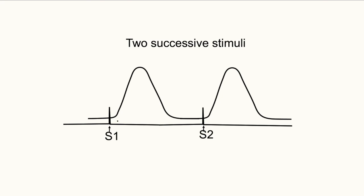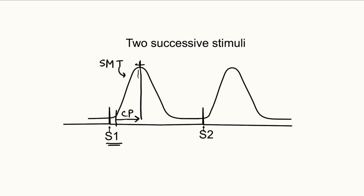When we stimulate an amphibian nerve muscle preparation with an electrical stimulus, what we get is a simple muscle twitch. S1 means the stimulus is given on the nerve, and the response of the muscle is the simple muscle twitch. The simple muscle twitch has three periods: the latent period, the contraction period, and the relaxation period.